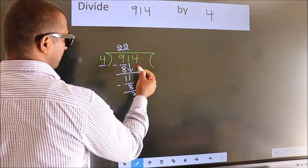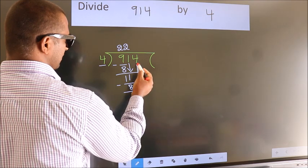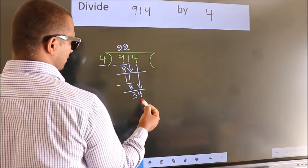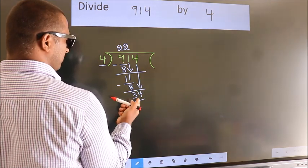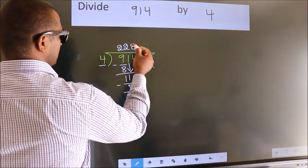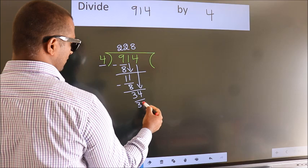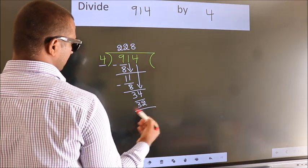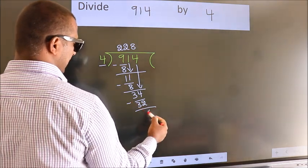After this, bring down the beside number, so 4 down, so 34. A number close to 34 in 4 table is 4 times 8, which is 32. Now, we subtract, we get 2.